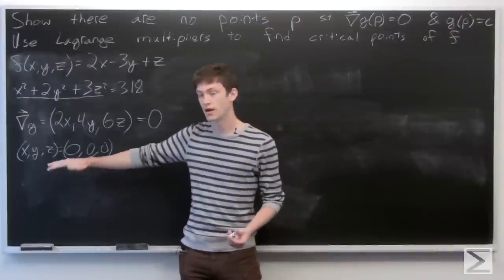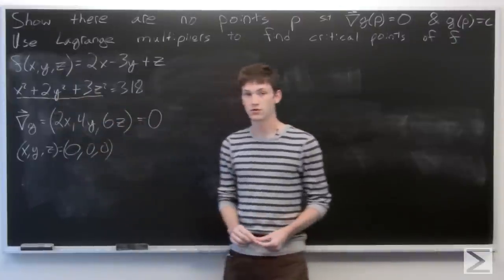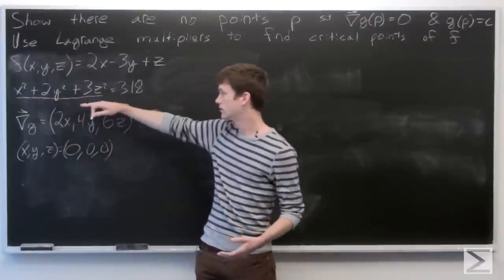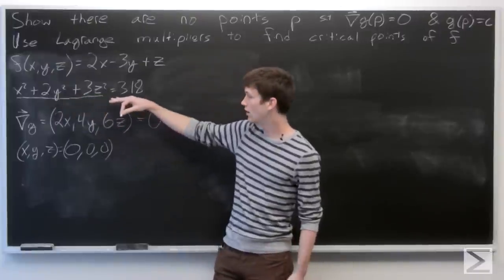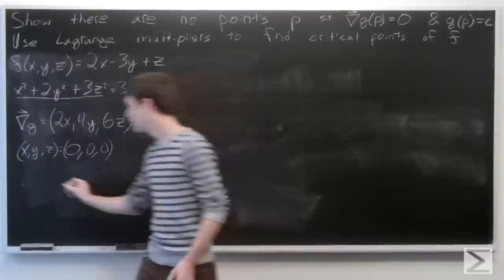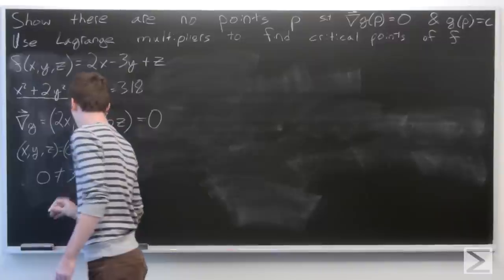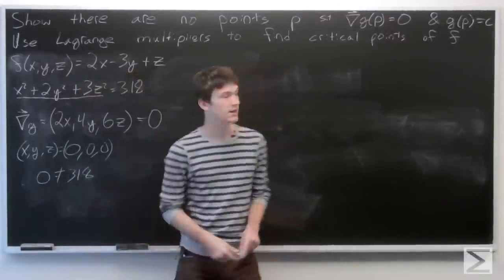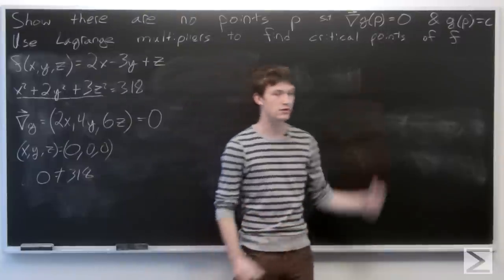Now we just want to make sure that point is not within our constraint. We'll go ahead and plug in x, y, and z equal to 0. We see that the left-hand side is 0 and the right-hand side is equal to 318. But 0 does not equal 318, so there are no points that satisfy our gradient vector equal to 0 and our constraint.